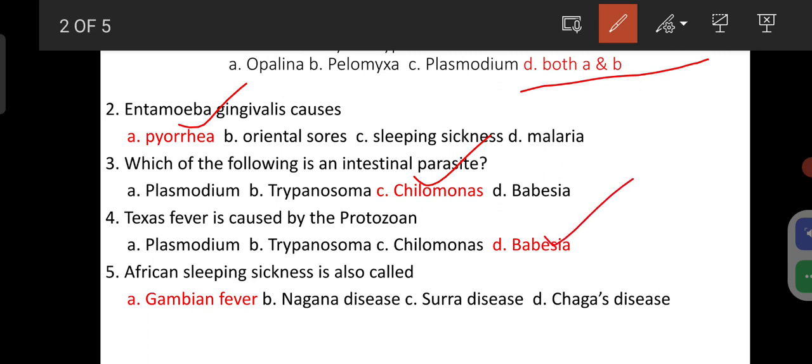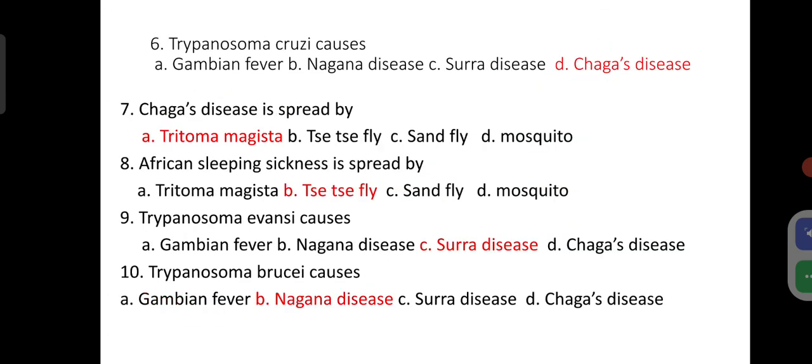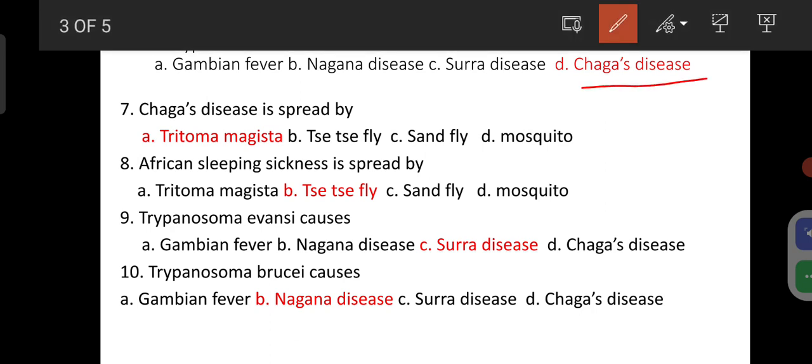African sleeping sickness is also called Gambian fever. Trypanosoma cruzi causes Chagas disease. Chagas disease is spread by Tritoma magista. African sleeping sickness is spread by Tsetse Fly.